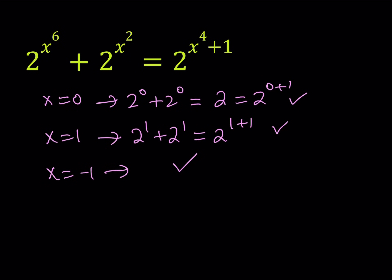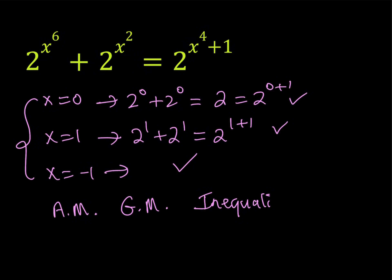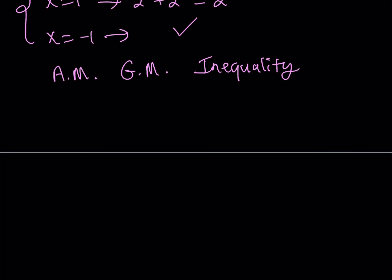Now, how do we find the other solutions, or how do we prove that there are no other solutions? We're going to be using some inequalities — specifically, what's called the AM-GM inequality. The AM-GM inequality deals with the arithmetic mean and the geometric mean of two or more numbers. In this case, we're dealing with two numbers.